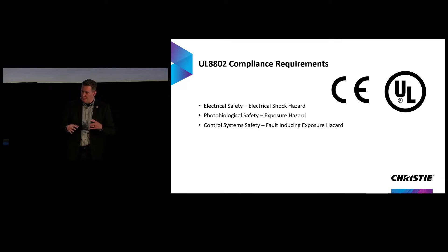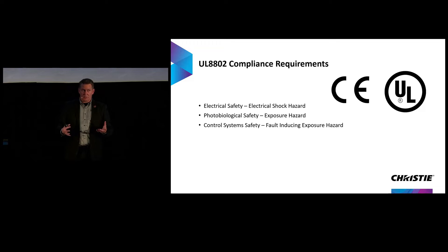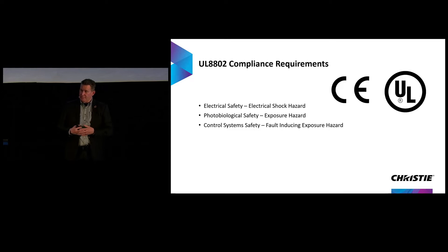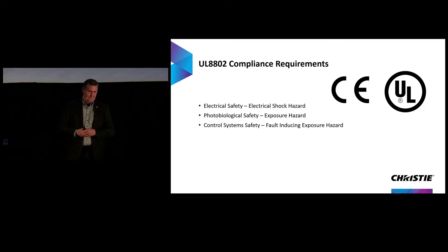The third piece of certification testing you want to make sure has been done is control safety. Basically, control safety asks: if a fault occurs somewhere in the system, could you end up violating the photobiological guidelines? They look at fault testing and verify that if there's a failure in any of your circuits or software, the system will degrade gracefully and not end up in an overexposure situation.